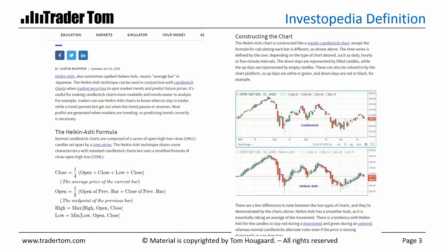With a standard moving average, every single sample within the sample space — say a 20-period moving average — each of the 20 periods weighs the same as each other. But when you have an exponential moving average, the most recent prices will have more emphasis on the calculation than the data plotted say 19 periods ago. So periods one, two, and three will have more emphasis than say 17, 18, 19, and 20.